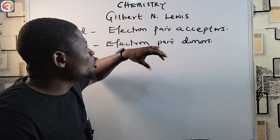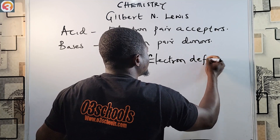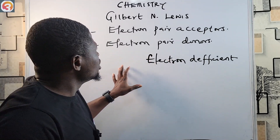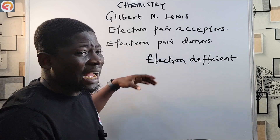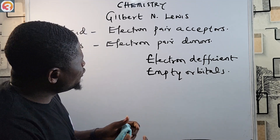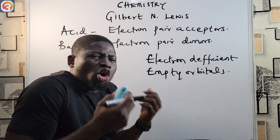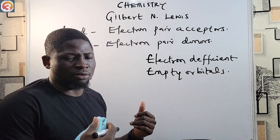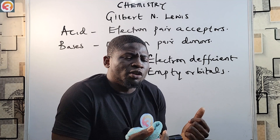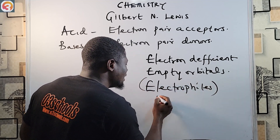From the definition you can see that for electron pair acceptors to be accepting electron pairs, it means that they are electron deficient. Apart from the fact that they are electron deficient, it also means that they have empty orbitals. Electron pair acceptors are electron deficient and they have so much love to accept electrons — and because of that we call them electrophiles, which means electron-loving.